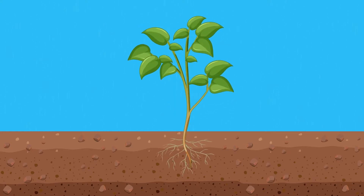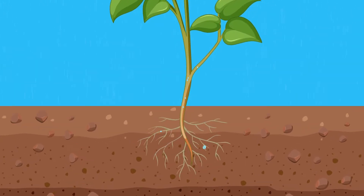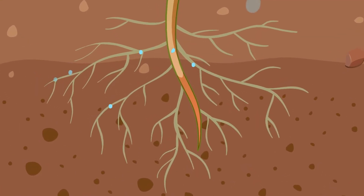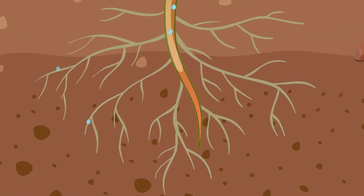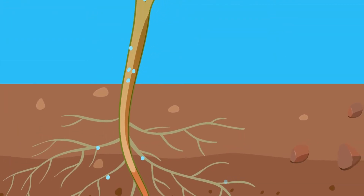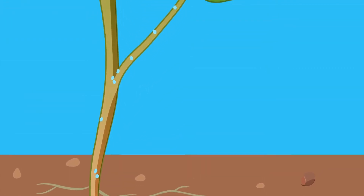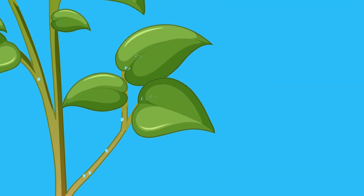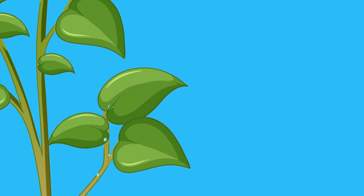Roots are usually the external structures that grow down into the soil. The primary function of the roots is to take in the water and nutrients the plant needs to survive and grow. The water moves from the soil through the roots and stem to the leaves, where it is used in the food making process of photosynthesis.